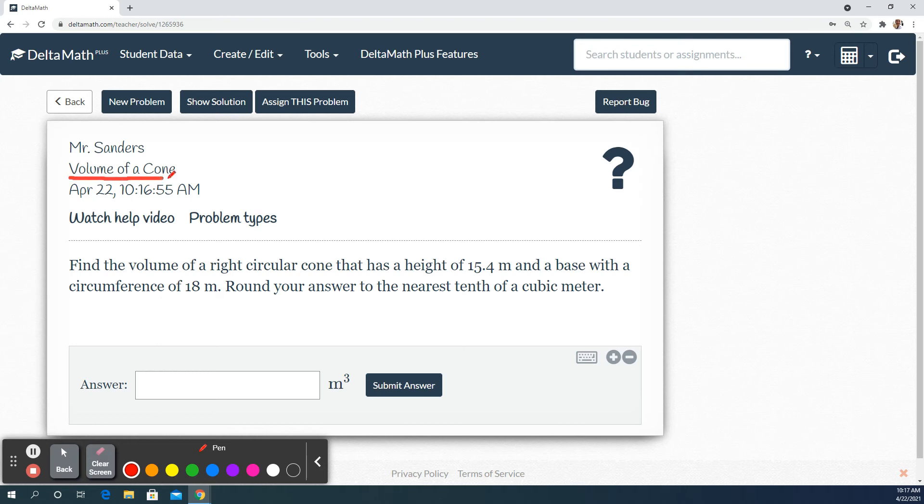We are doing a volume of a cone. We are asked to find the volume of a right circular cone that has a height of 15.4 meters, a base with a circumference of 18 meters, and they want us to round our answer to the nearest tenth of a cubic meter.